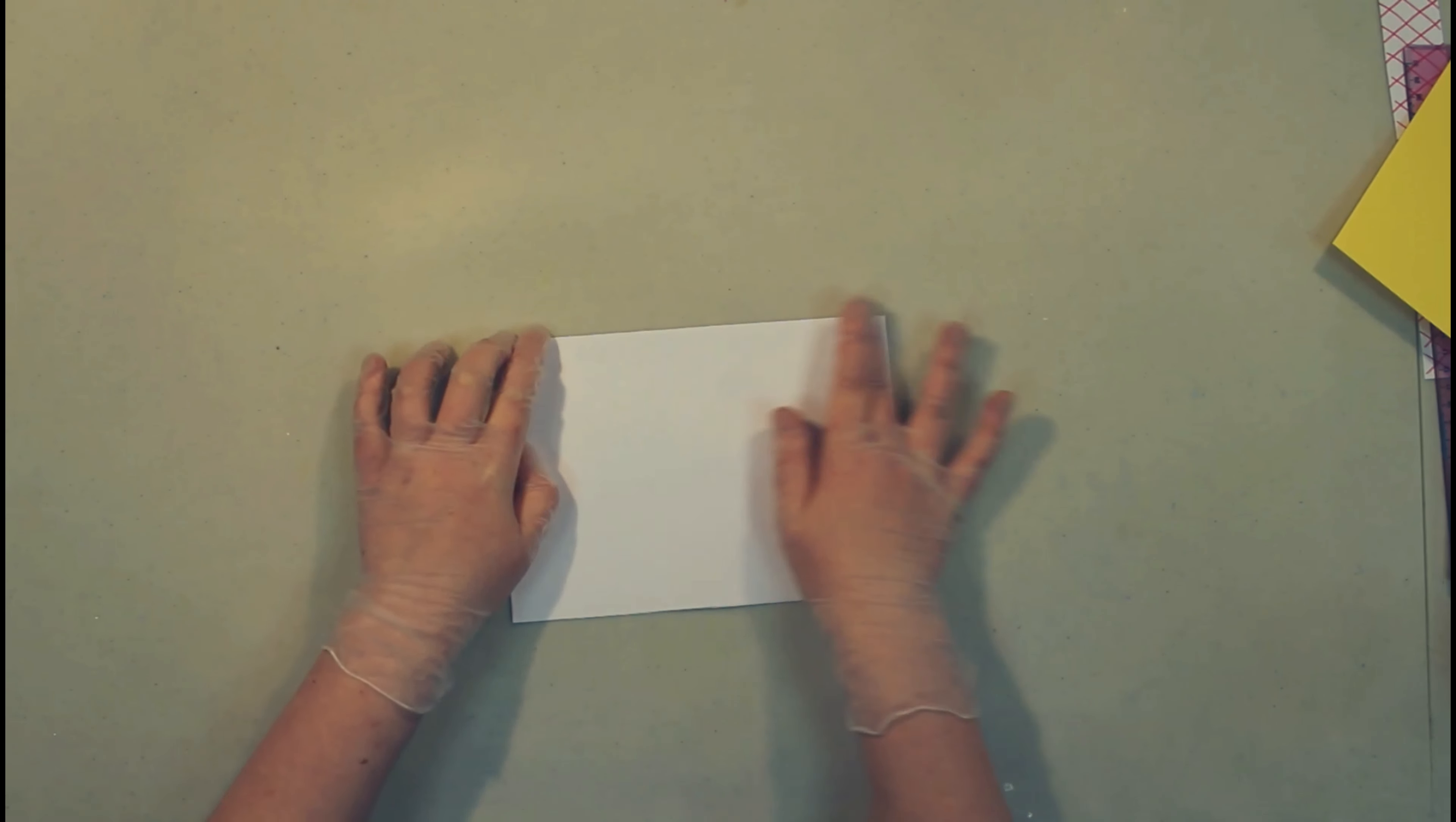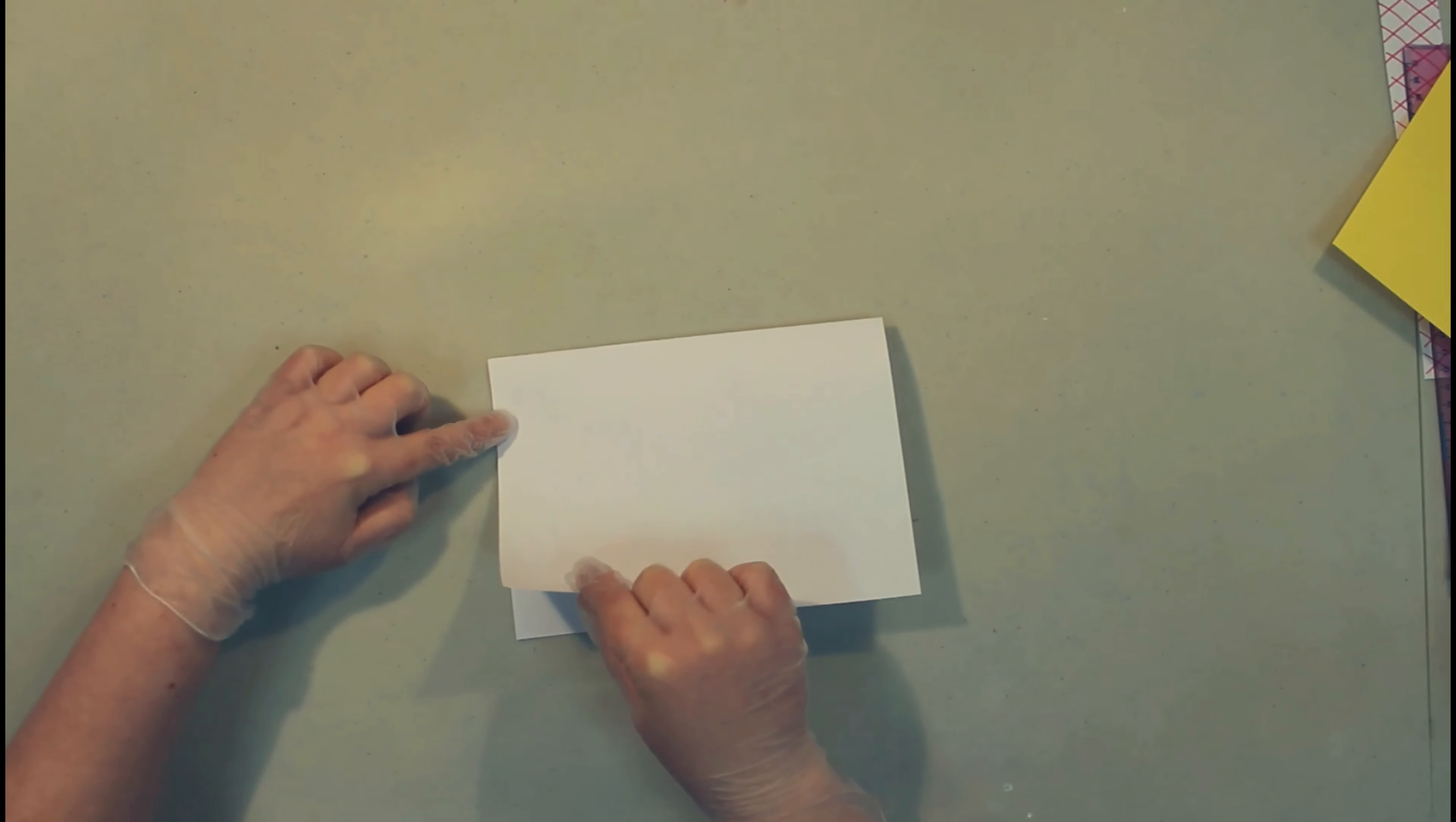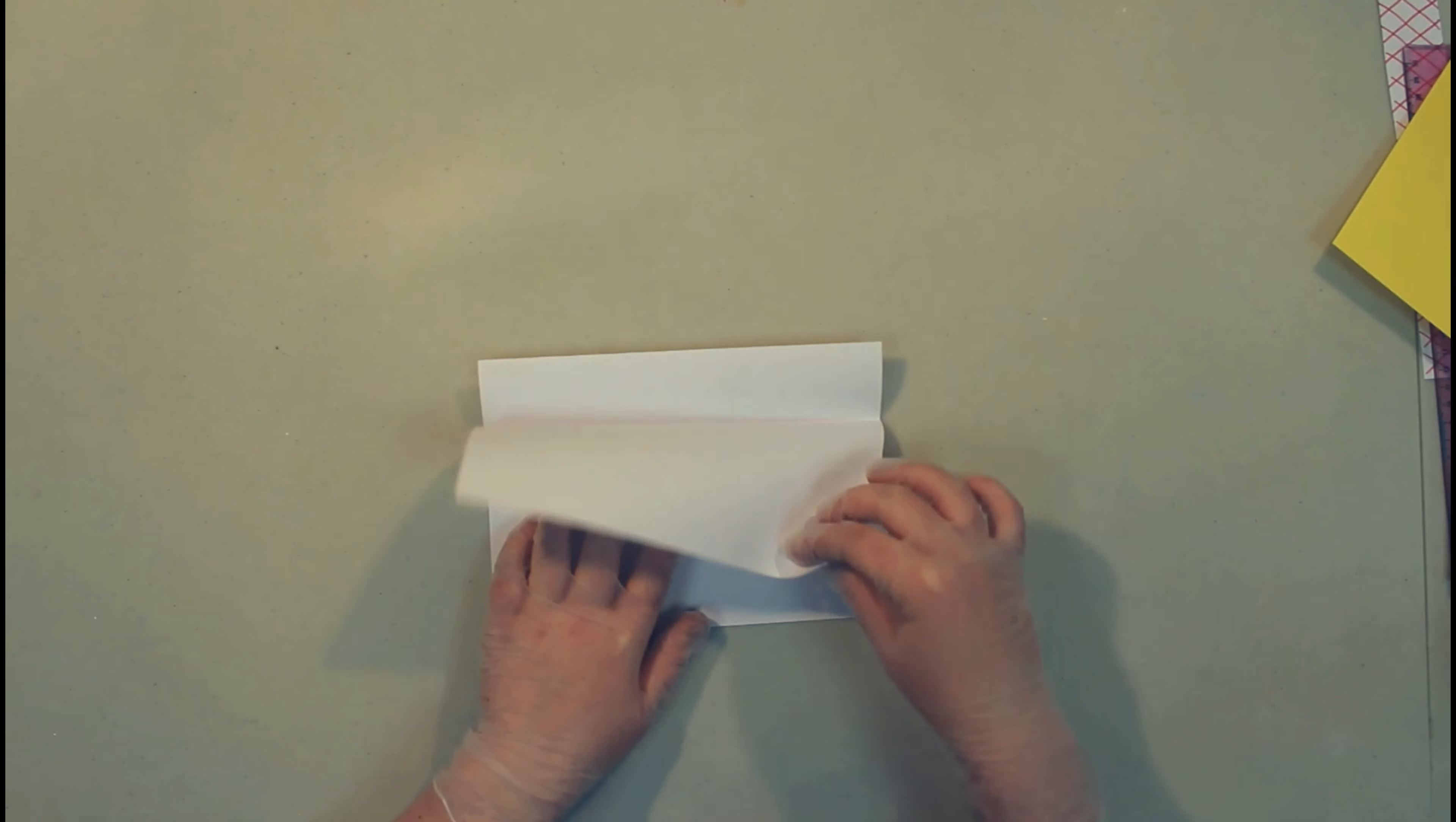The thing you're going to need to do is fold the paper in half and then fold it again just a little bit further up. So this creates a rectangle in the center.